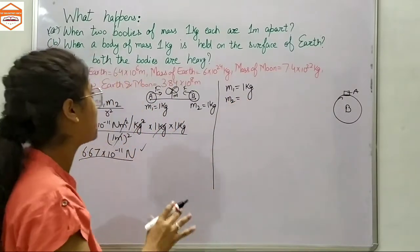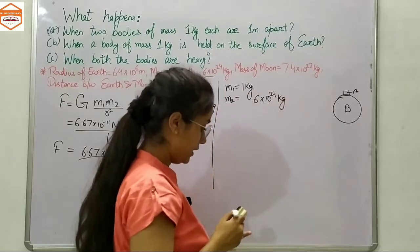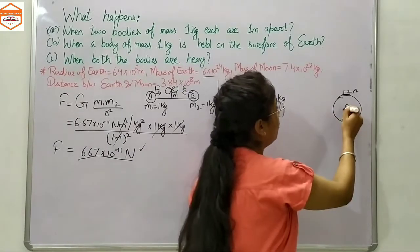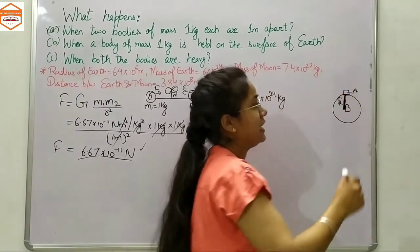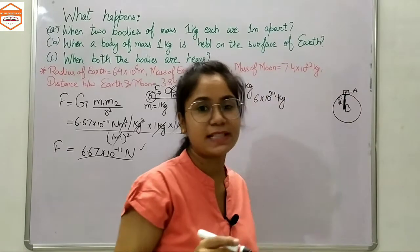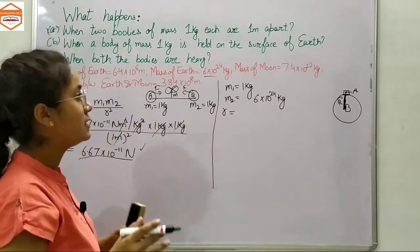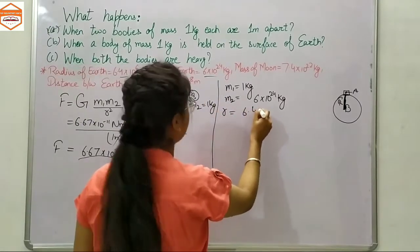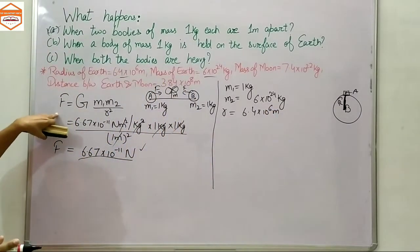The mass of Earth is 6 × 10²⁴ kilograms. Since the object is on the surface of Earth, the distance between them is the radius of Earth, taken from the centers of the two bodies. The radius of Earth is 6.4 × 10⁶ meters.